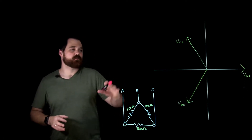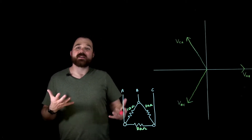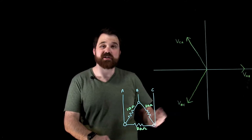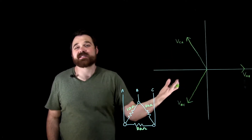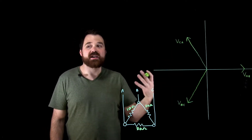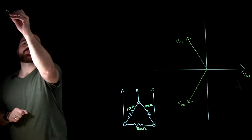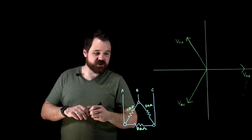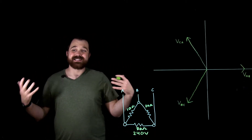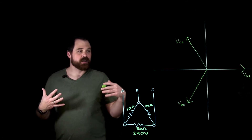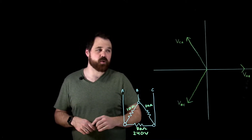We're going to solve each phase, plot them onto the phasor diagram, and then solve the line current. I've already plotted the phase voltages, which equal the line voltages — they're constant and consistent within a delta circuit. This is a 240-volt delta source, meaning A to B sees 240 volts, B to C sees 240, and C to A sees 240.